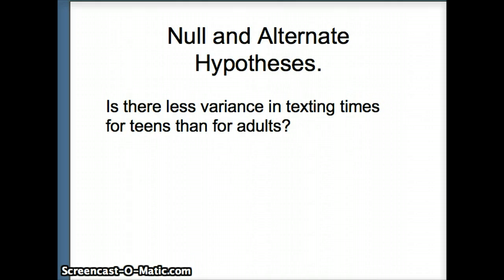So we have to establish our null and alternate hypotheses. Is there less variance in texting times for teens than for adults? So this sounds to me like it will be a one-tailed test. What the researcher wants to determine typically goes in the alternate hypothesis, HA. So we're going to say H0, the two variances are equal, versus HA, the variance for teens is less than the variance for adults.